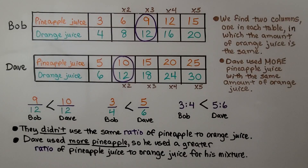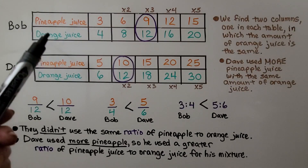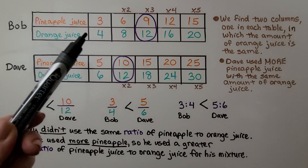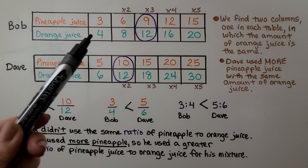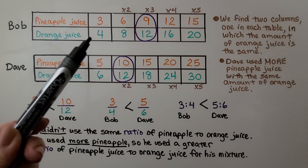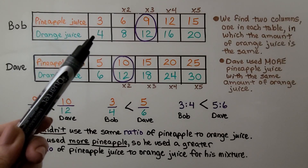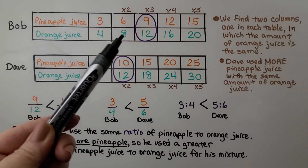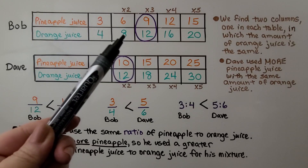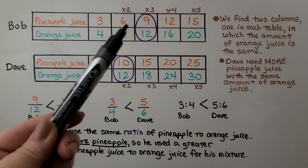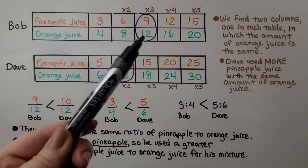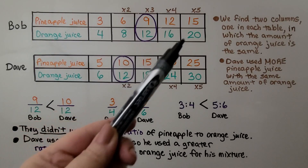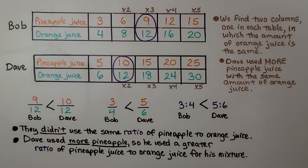We make a table for Bob. He used 3 cups of pineapple to 4 cups of orange. Multiplying by 2 gives 6 and 8; multiplying by 3 gives 9 and 12; and we continue multiplying by 4 and by 5.